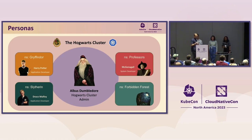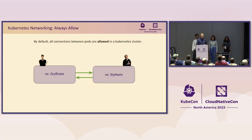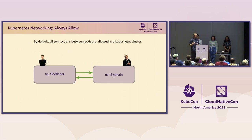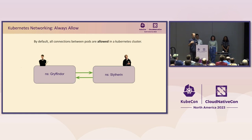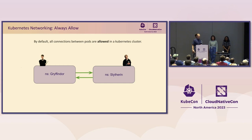Let's hop into ground zero. Today in Kubernetes, the basic networking model is every pod can talk to every pod. Here you can see Gryffindor namespace pods can always talk to Slytherin namespace pods. Everything is kosher. By default, everything's allowed.